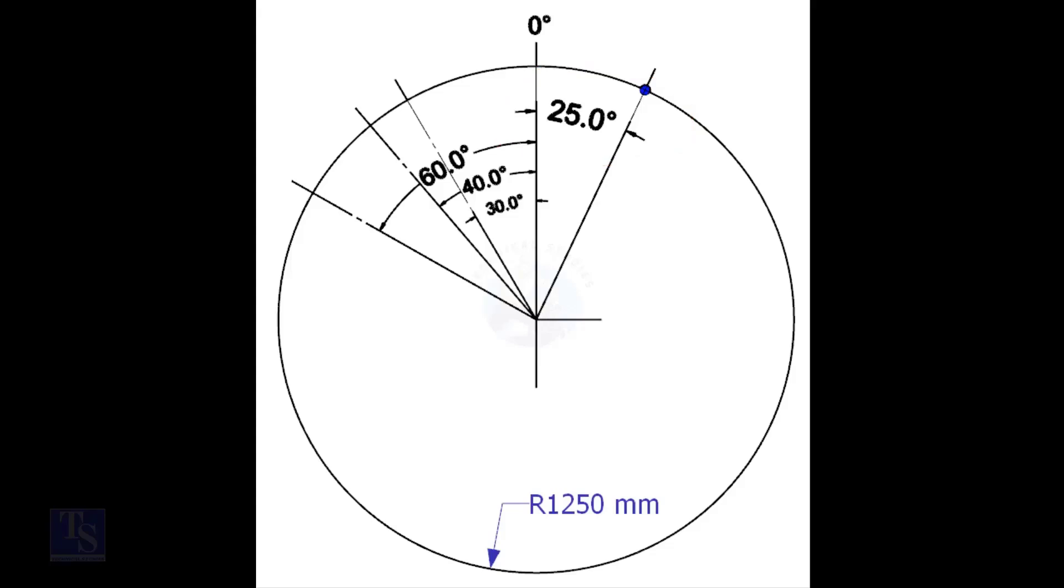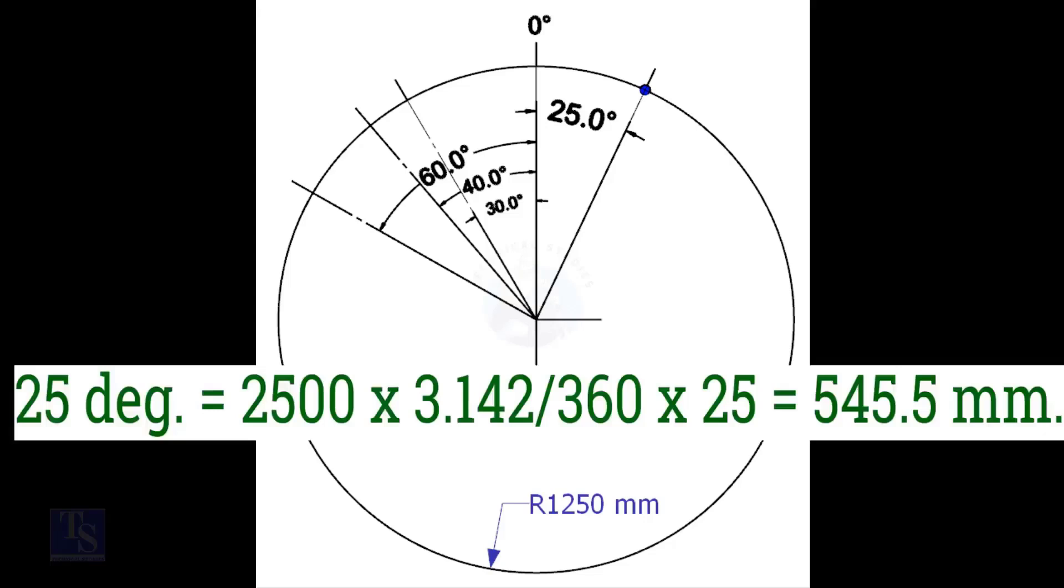We know the included degree and the diameter of the tank. Let us calculate the arc length. Arc length for 25 degrees equals outer diameter times 3.142 divided by 360 times 25, equals 545.5 millimeters.